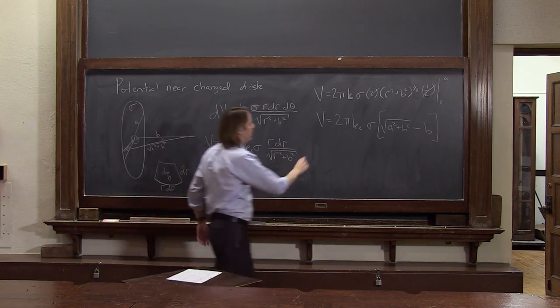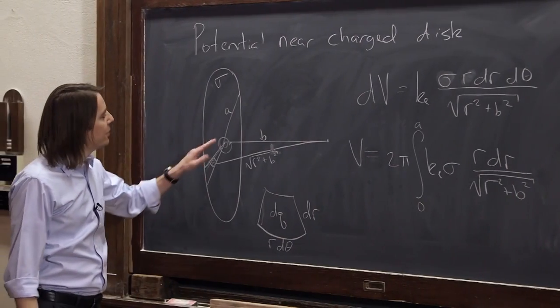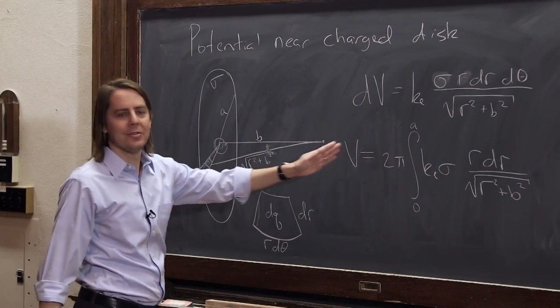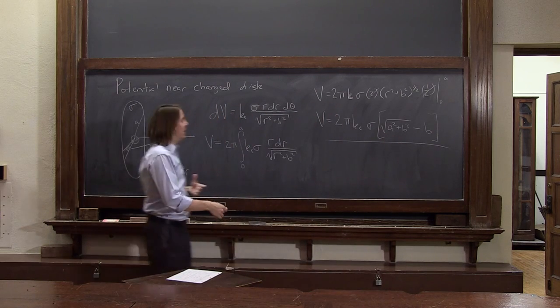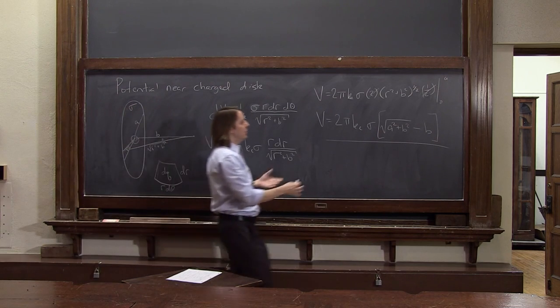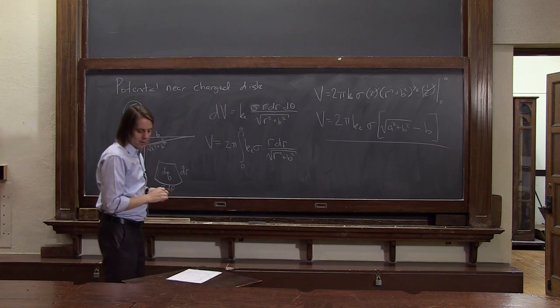So there's your potential off the axis of the disk. And like the electric field, this is another case where we've now solved it for any position on the axis. So we have a b here. But if you wanted to say, what's the potential as a function of distance, you could call that the z-axis. And the b just becomes z.